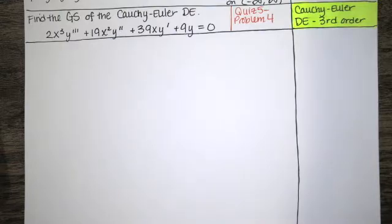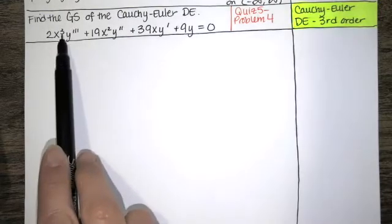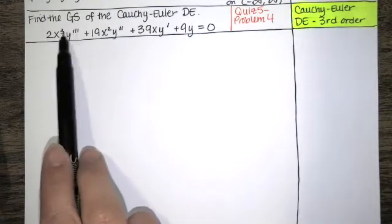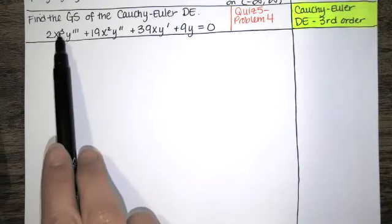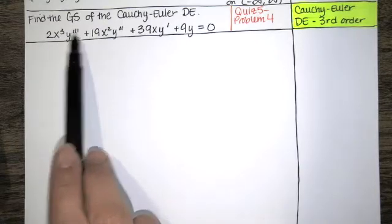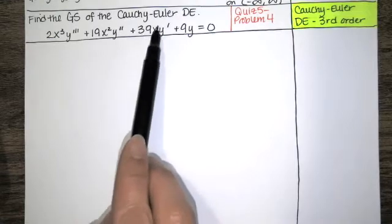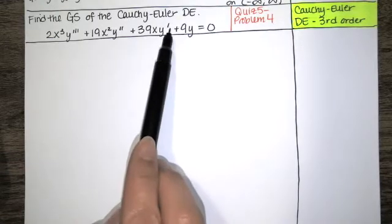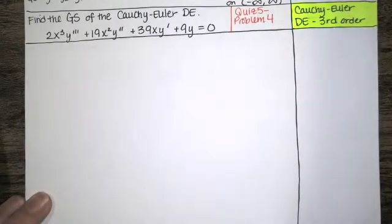Notice that the differential equation is Cauchy-Euler because the power of x and the order of the derivative multiplying it are the same. So we have an x cubed and a y triple prime, an x squared and a y double prime, x to the first and a first derivative, and x to the zero and the zeroth derivative — the original function. So this is a Cauchy-Euler differential equation.